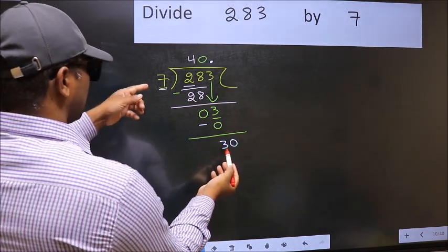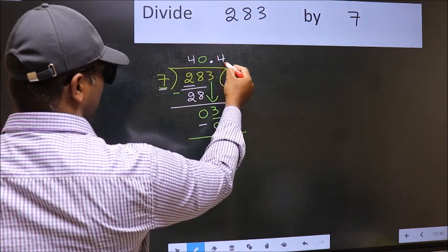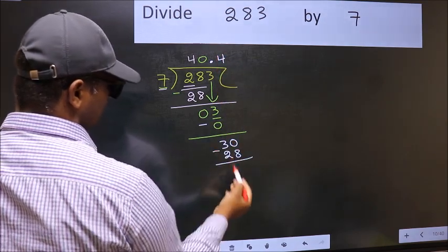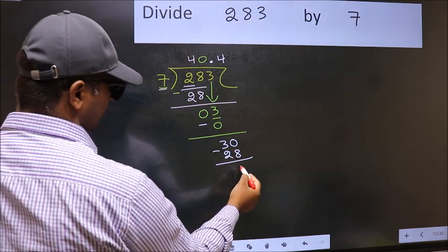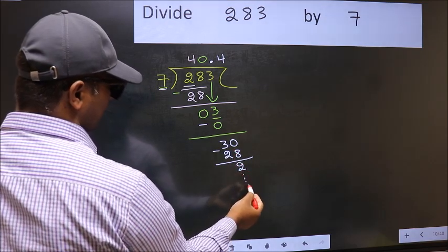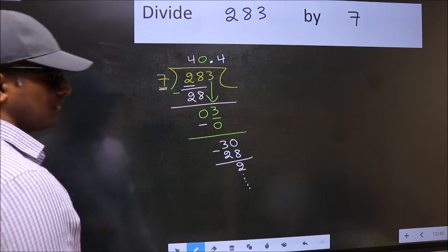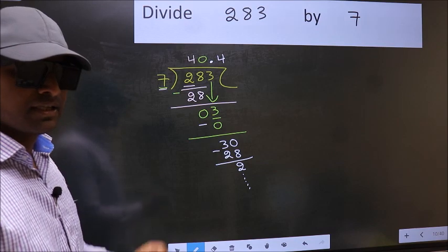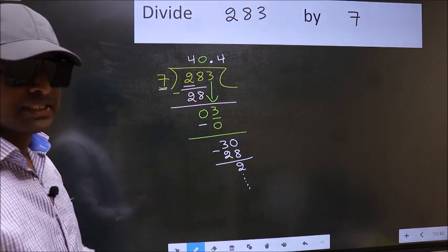A number close to 30 in the 7 table is 7 fours 28. Now you should subtract. 30 minus 28 is 2. And continue the division. I am not doing that. Did you understand where the mistake happens? You should not do that mistake.